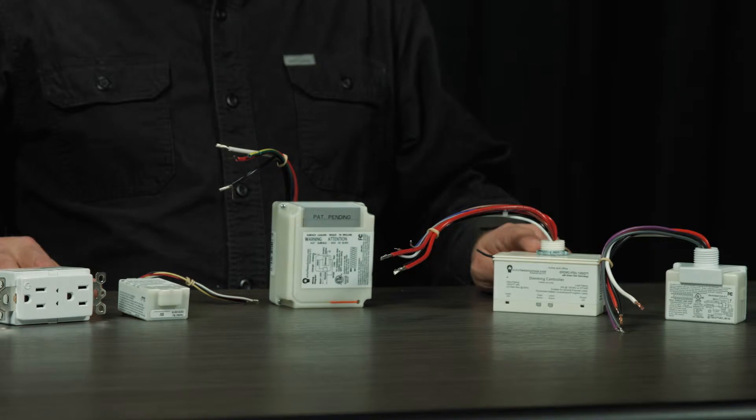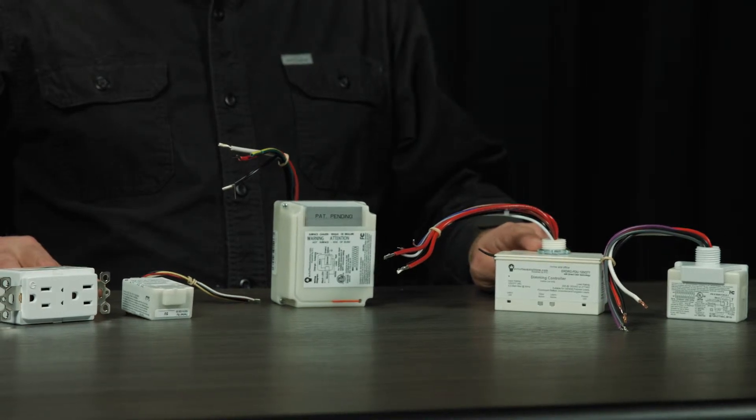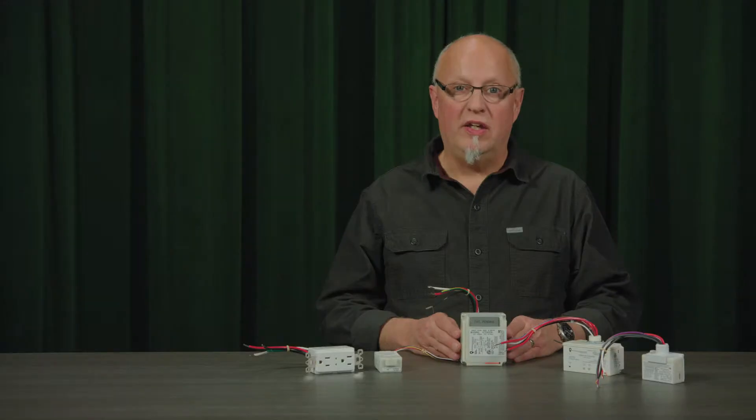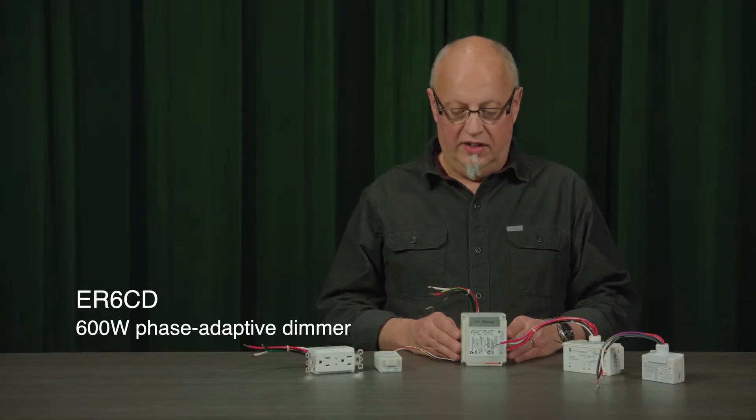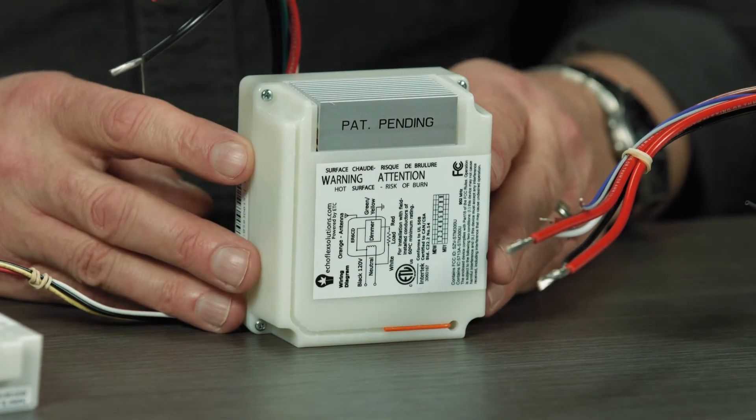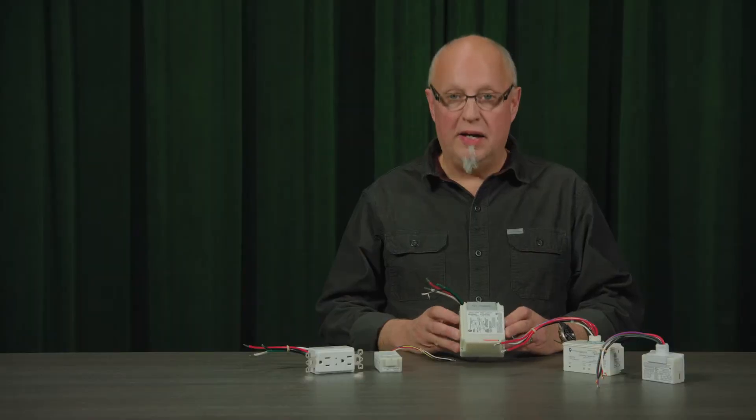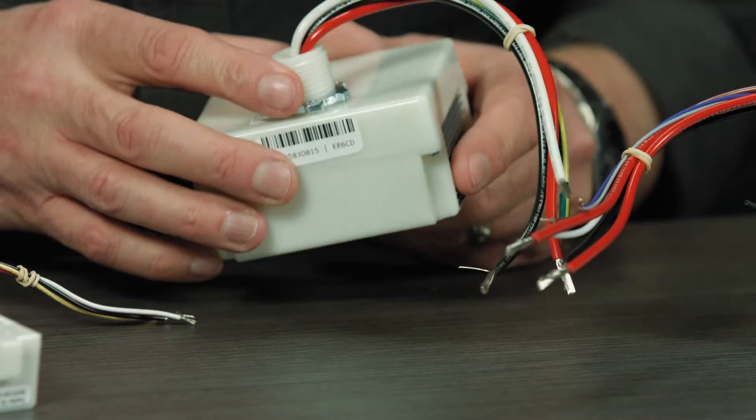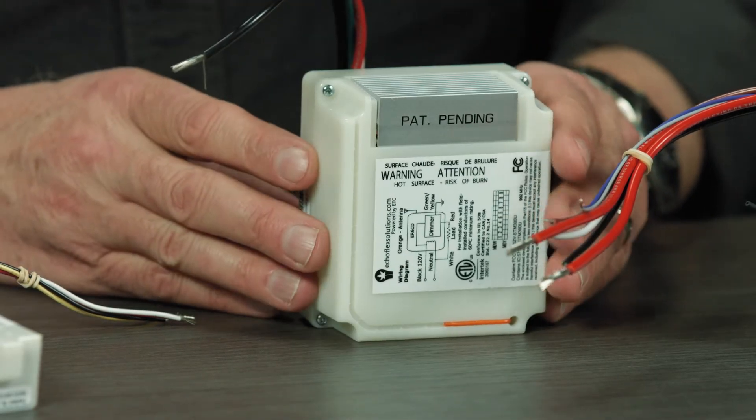The next one in line here is our phase dimmer, the ER6CD. It is a phase adaptive dimmer, which means that it can support reverse and forward phase dimming. It will support up to 600 watts of dimming. It is also a power pack style. All of these power packs are plenum rated. You can see the 1.5 inch nipple for mounting there on conduit.